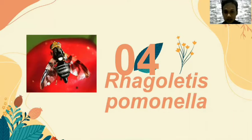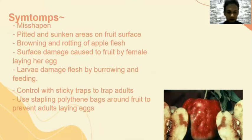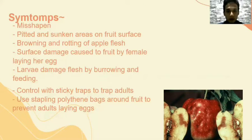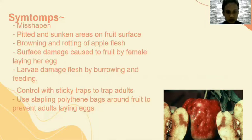The next pest is Rhagoletis pomonella. The symptoms are: first, the oviposition cycle; second, punctures sunken or raised on the surface; third, browning and rotting of apple flesh; fourth, surface damage caused by female laying eggs; fifth, larva damage caused by burrowing and feeding; sixth, control with sticky traps to trap adults; seventh, use of protective polythene bags around fruit to prevent adults from laying eggs.